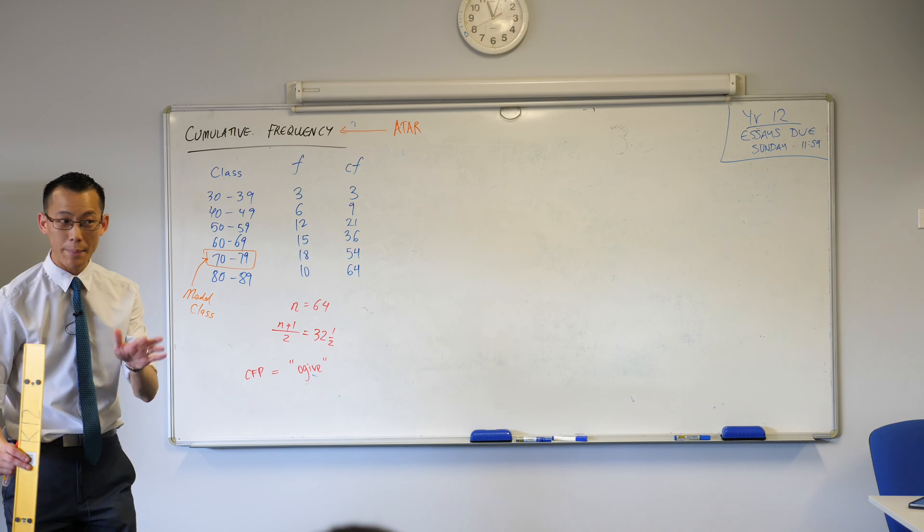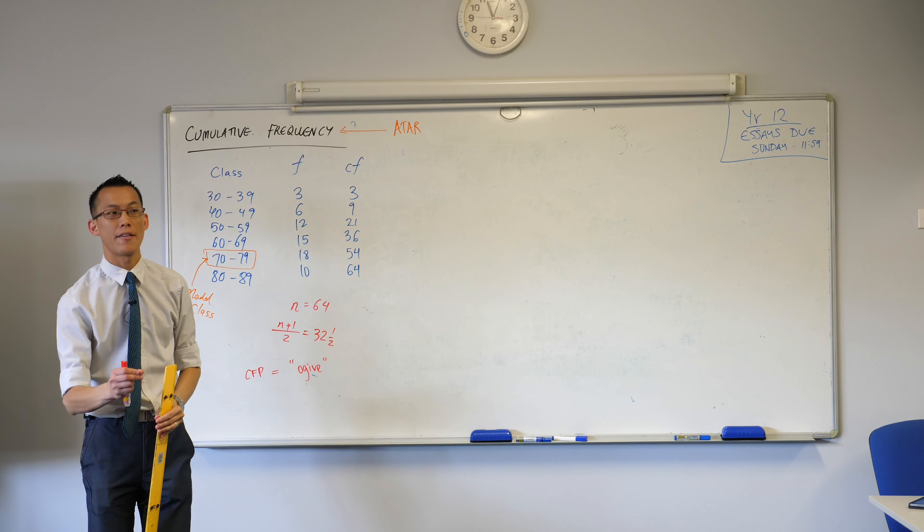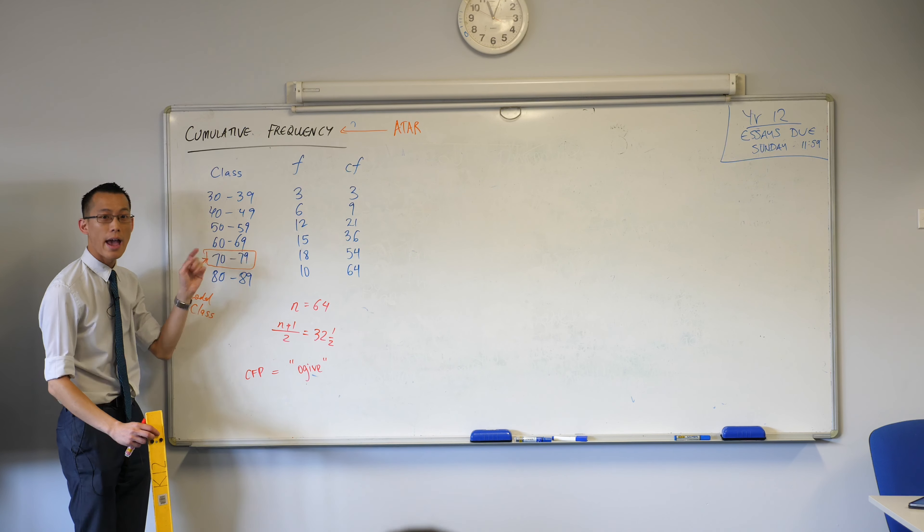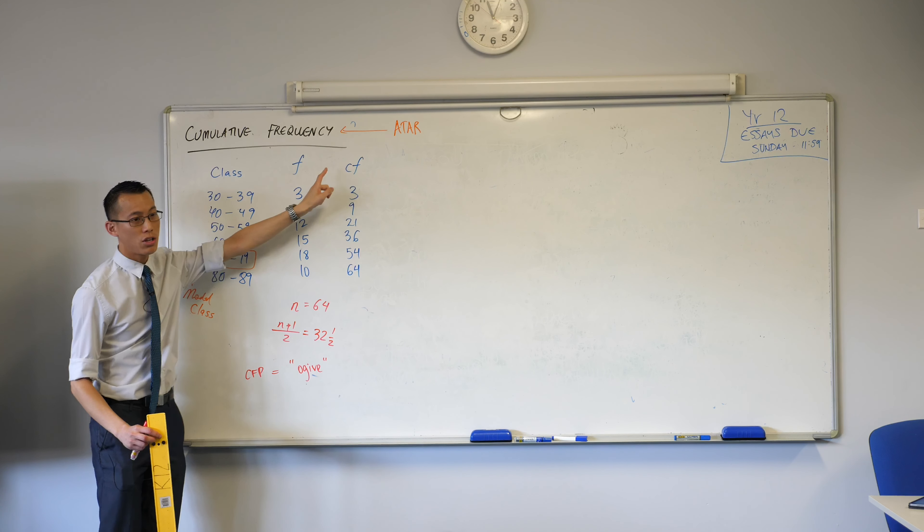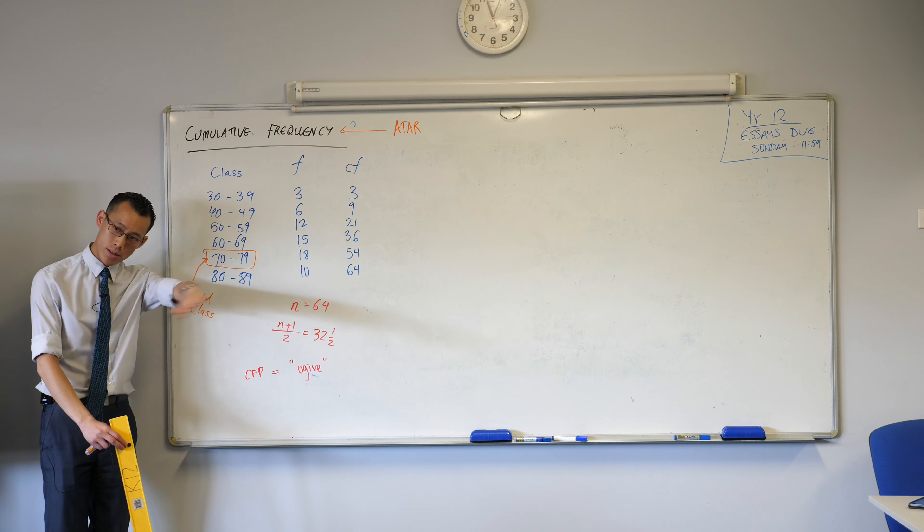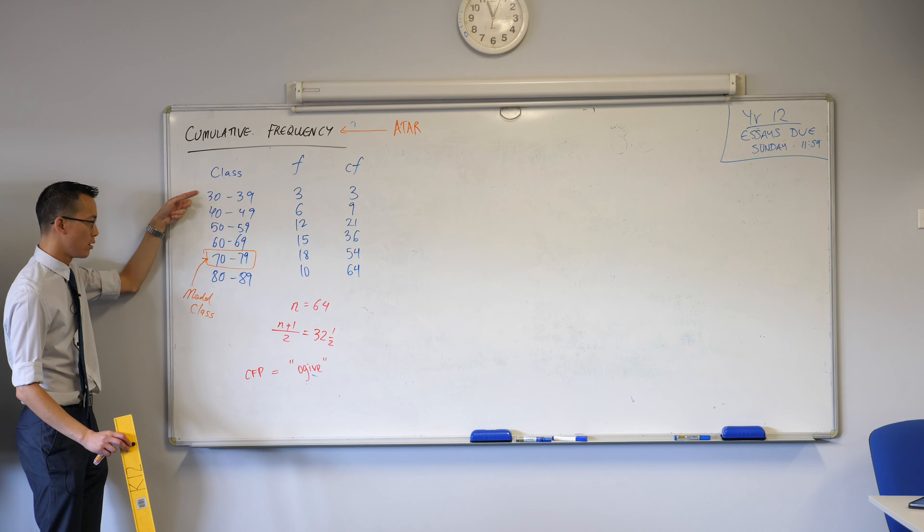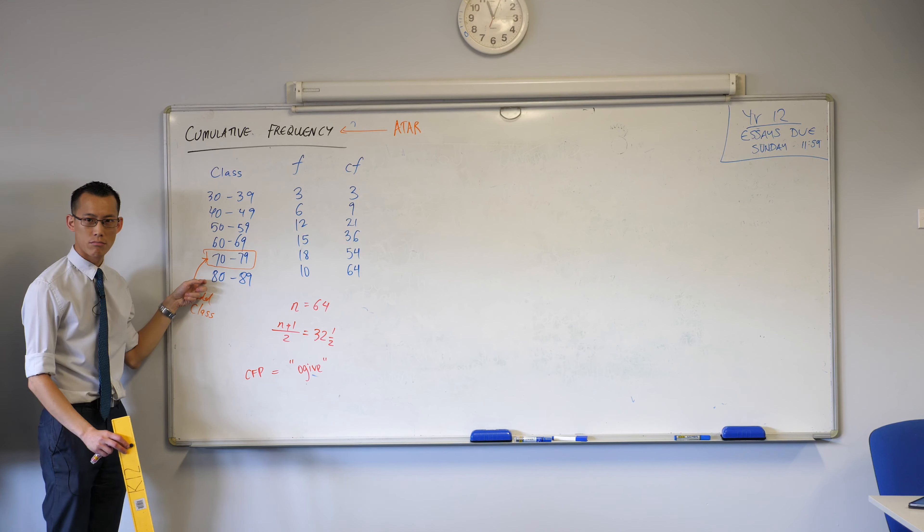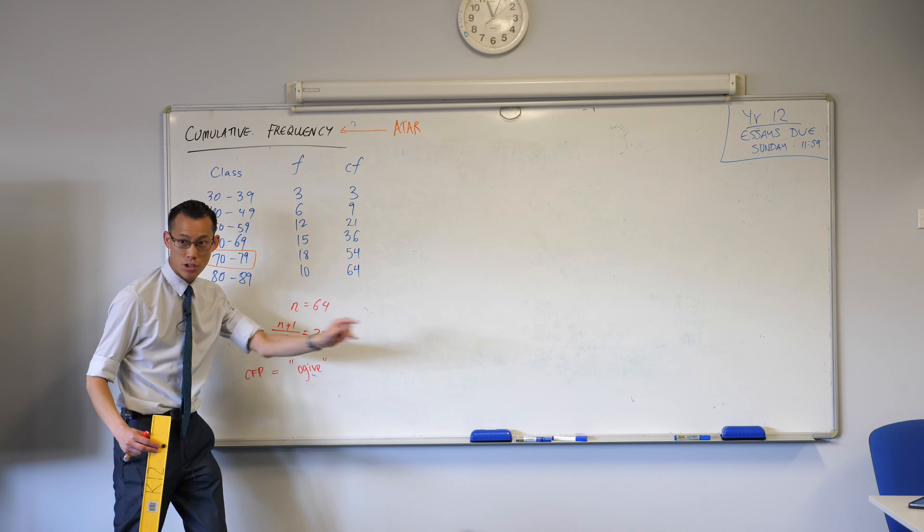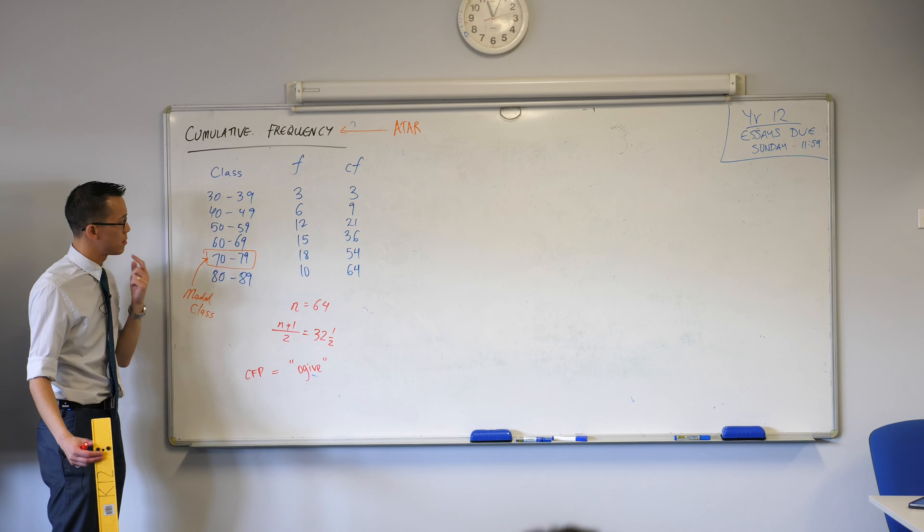Before we put pen to paper, let's think about our axes. What we're going to be graphing is the classes, these scores over here, as compared to our cumulative frequency because it's a cumulative frequency polygon that we're going to draw. Across the bottom, which is going to be scores, we're going to have to range from 30, that's our lowest score, all the way up to 89 or 90, we'll do it in tens. You can start to think about how wide that should be.